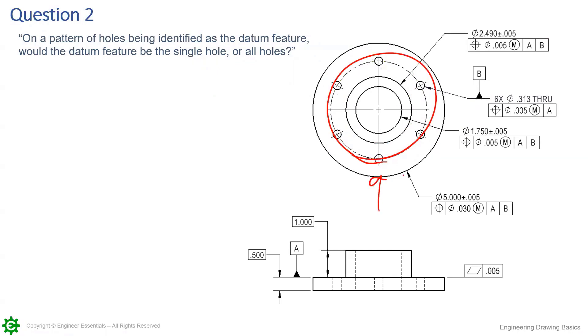When you bolt this down, this pattern of holes sets the location of this part. We see datum plane A down here setting translation up and down and rotation. But what locates this part in the assembly is this bolt pattern, and that's perfectly fine. In fact, that's probably how most parts work when they're a flanged part like this.